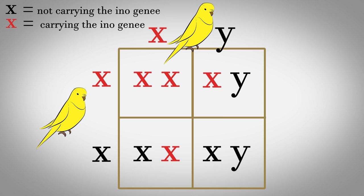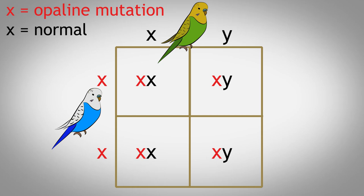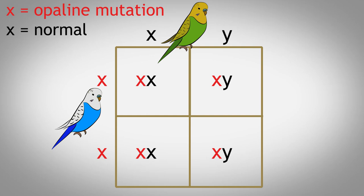Now let's look at a different example. Let's say the father is opaline — meaning both of his genes are opaline — and the mother is not. In that case, all the females would be opaline, as you can see in the Punnett square, because whatever X chromosome they get from their father has the opaline gene, and that's all the female needs to be opaline. Meanwhile, all the males would be carriers for that gene, but none of them would actually be opaline, because males have to get an X from the father and an X from the mother, and since the mother doesn't have the opaline gene, none of them will be opaline.